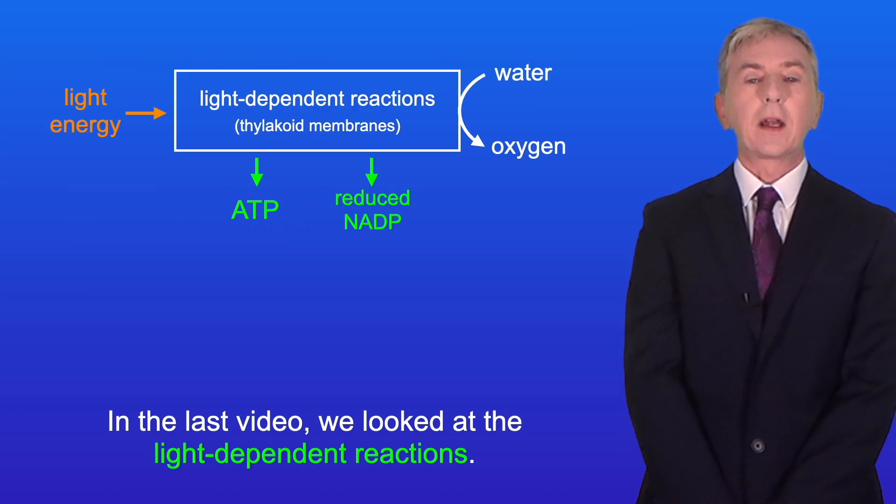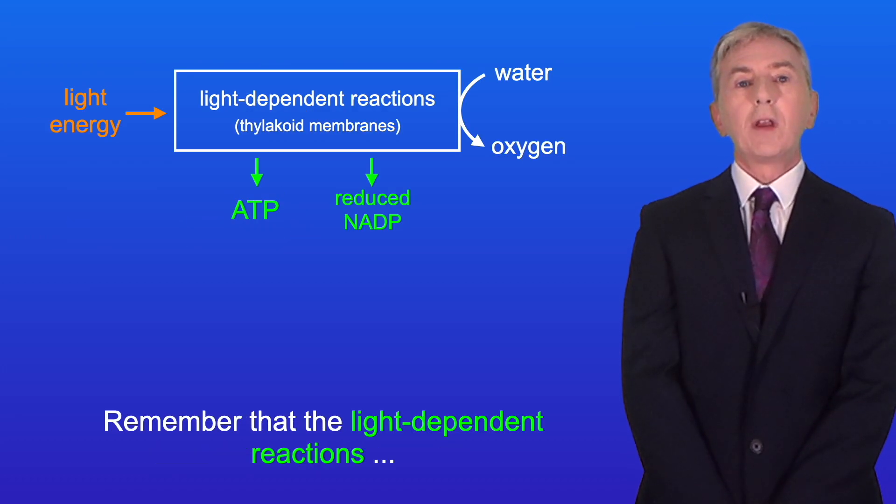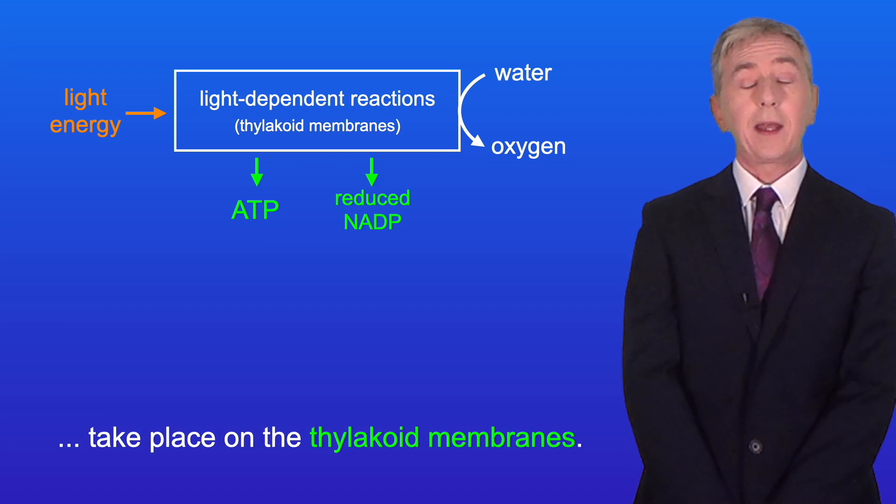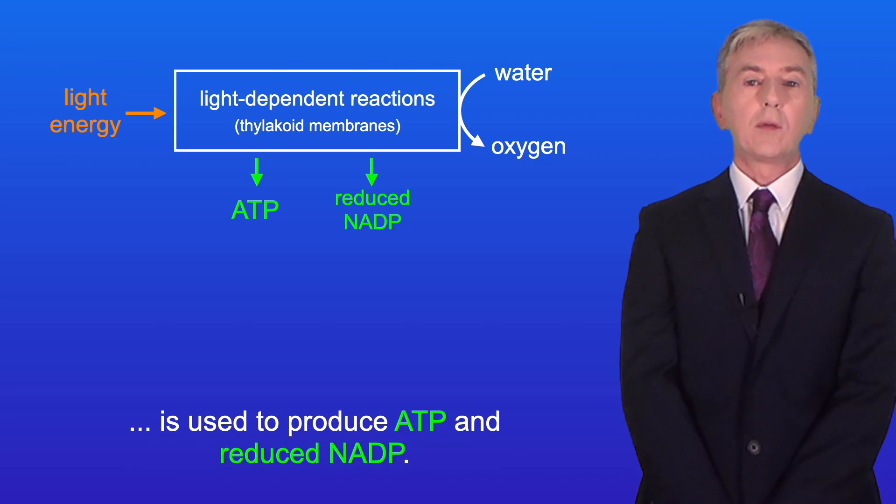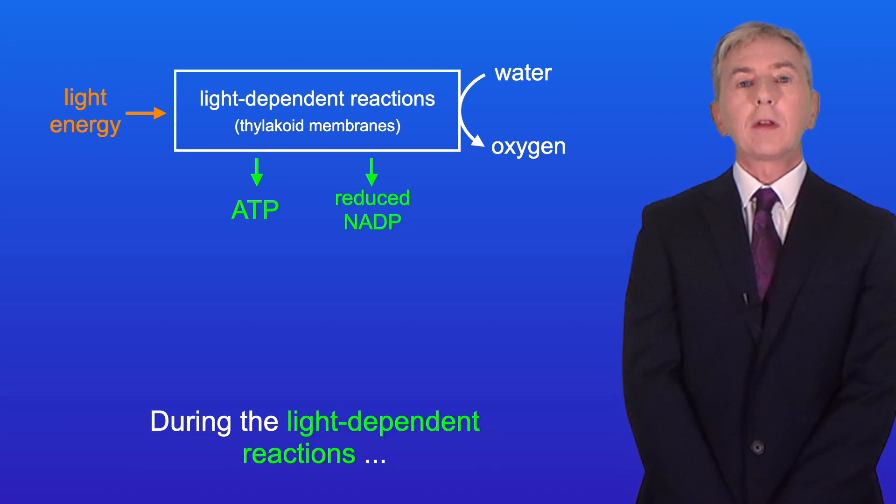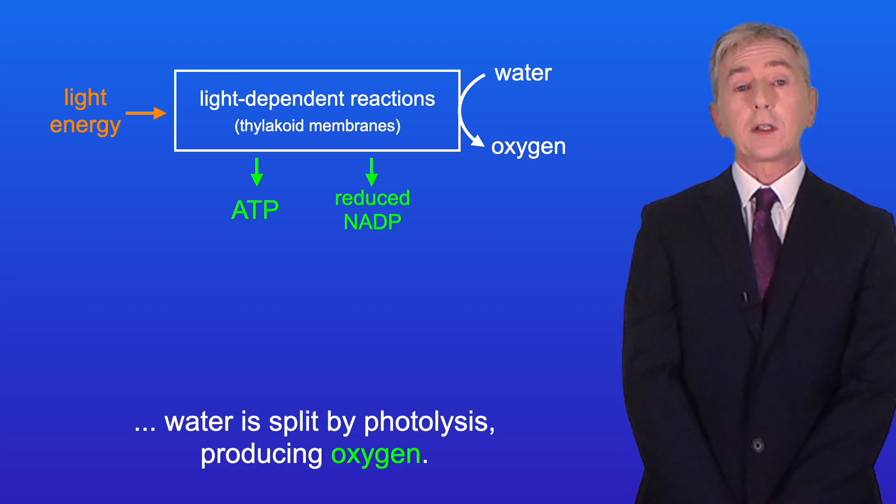In the last video, we looked at the light-dependent reactions. Remember that the light-dependent reactions take place on the thylakoid membranes. During these reactions, energy from light is used to produce ATP and reduced NADP, and water is split by photolysis, producing oxygen.